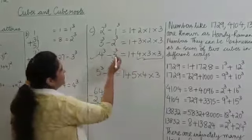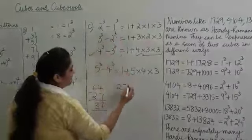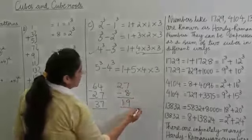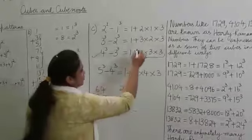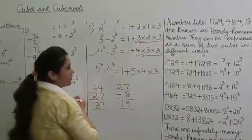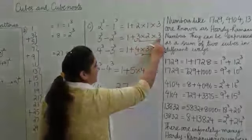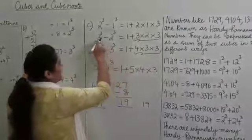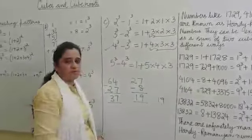Let's check another one. What's 3 cubed? 27. What's 2 cubed? 8. And 27 minus 8 is 19. Using the formula, 3 into 2 into 3 gives 18, plus 1 equals 19. So you see the values are 19 here and 19 here. This is yet another beautiful pattern.